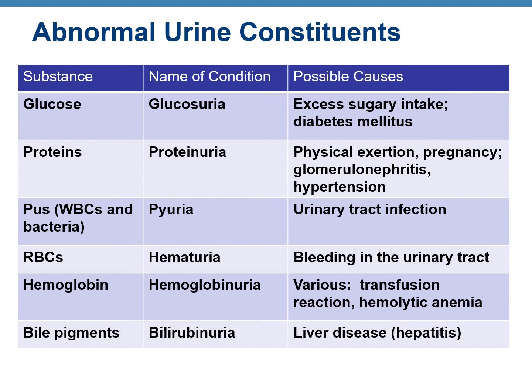For example: if glucose is found in urine, the condition is called glucosuria, and possible causes include too much sugar intake or diabetes mellitus. If RBCs are seen in urine, the condition is hematuria, and a possible cause is bleeding in the urinary tract. If bile pigments are seen in urine, the condition is bilirubinuria, and the possible cause is hepatitis.